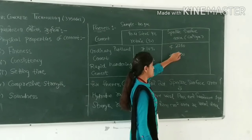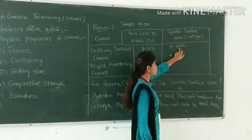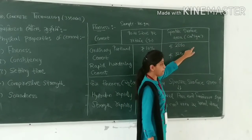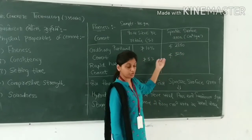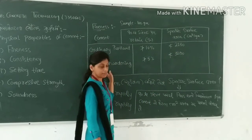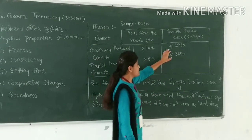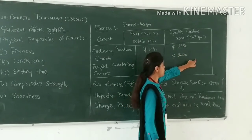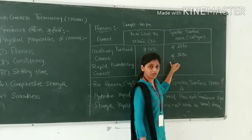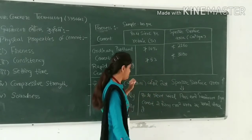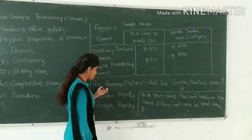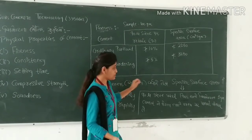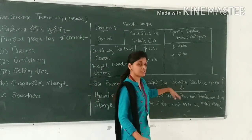A 100 gram sample is sieved through a 90 micron English standard sieve. The surface area is approximately 3 to 50 cm² around the surface area of the cement particles.